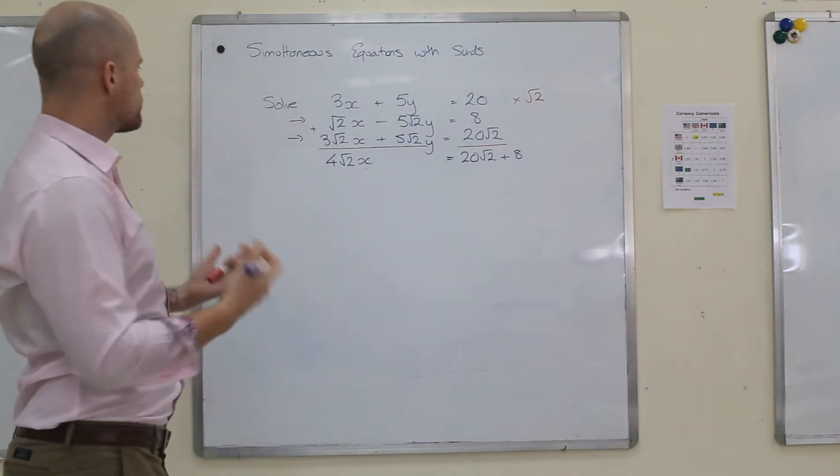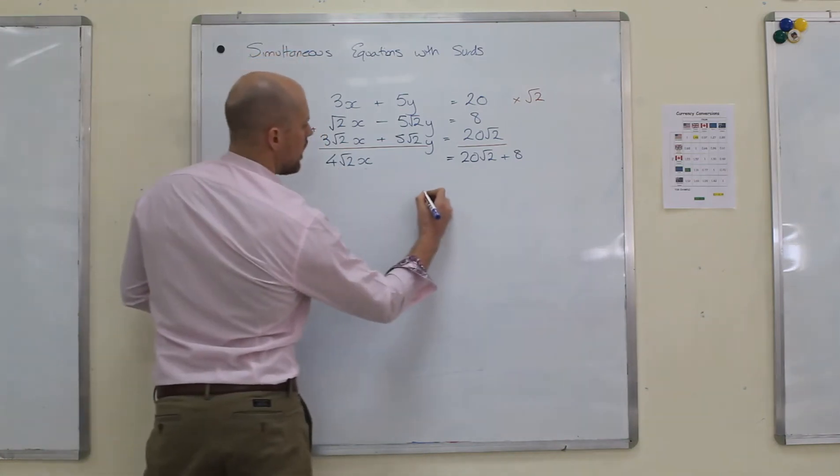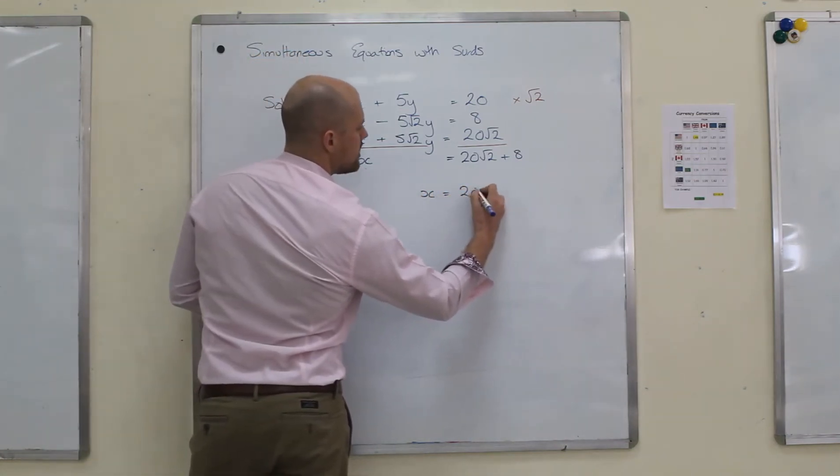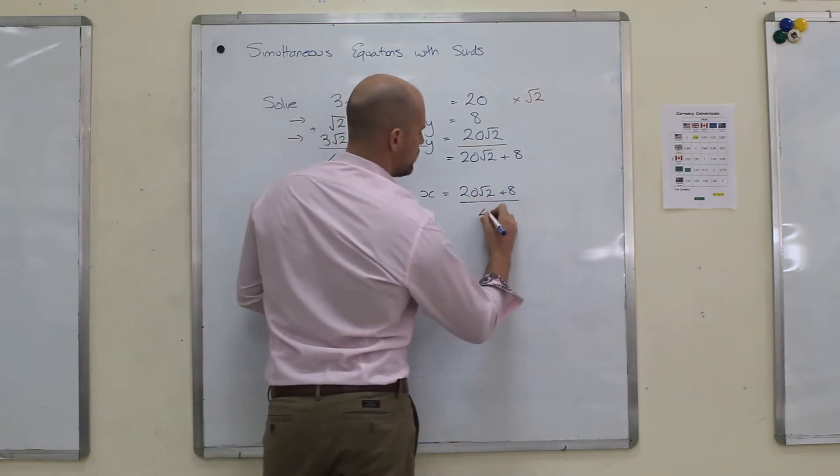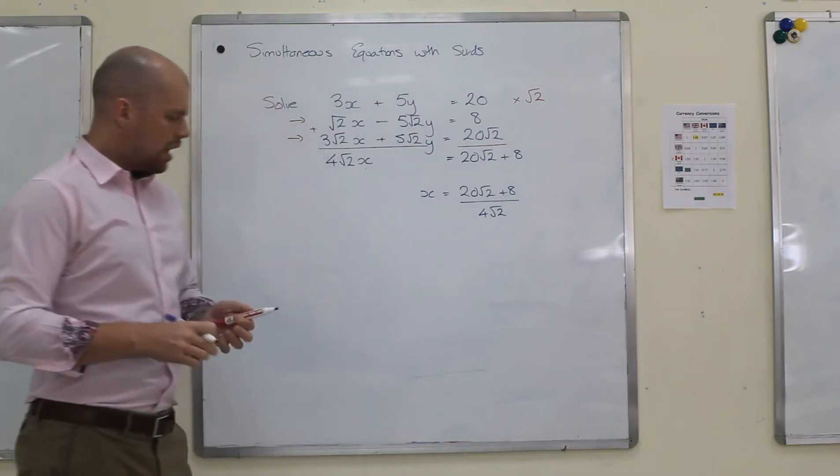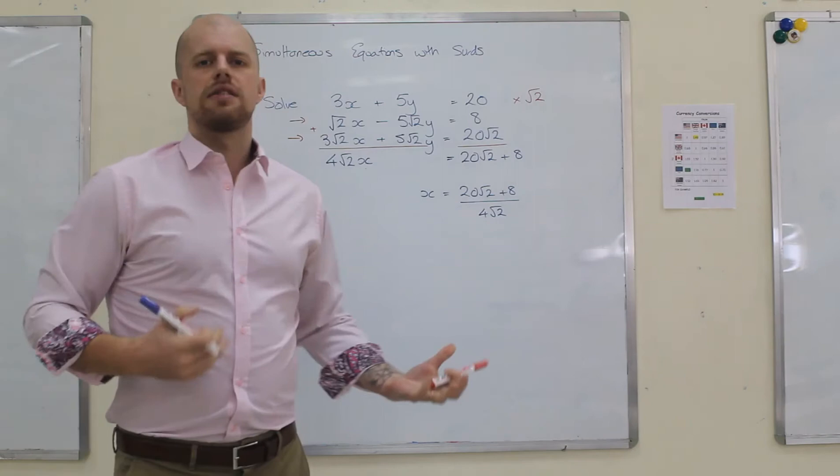So all I want to do now is I've got this equals this, so I can just divide. x is 20 root 2 plus 8 divided by 4 root 2. This obviously isn't a very nice answer, so what we need to do is rationalize the denominator.